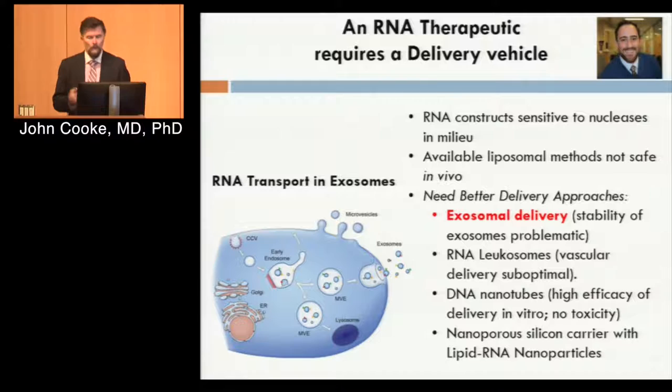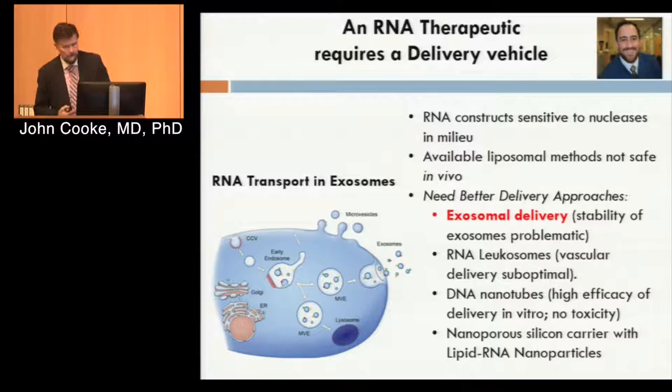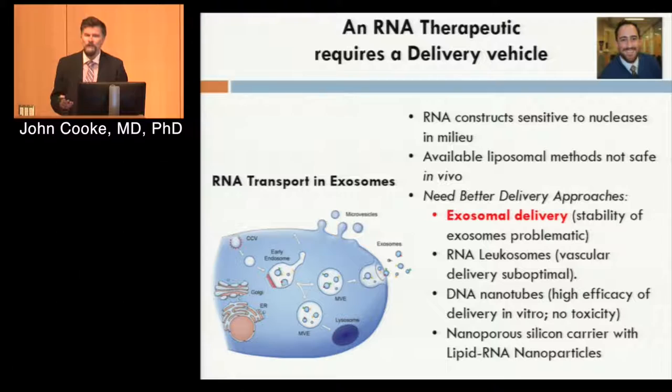It's a good idea because it uses an endogenous system. But one of the problems we were never really able to resolve — and maybe we should have got our nano colleagues more involved — is that the stability of the exosomes was problematic. We couldn't maintain their stability; they would merge with each other. The other problem with exosomes is they're dirty: they already have microRNA, message RNA, proteins, and lipids. Ultimately, we decided to look at other delivery approaches that our nano colleagues were offering us.